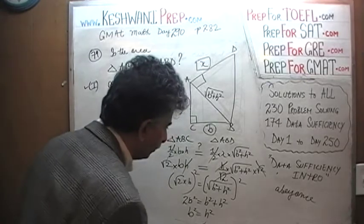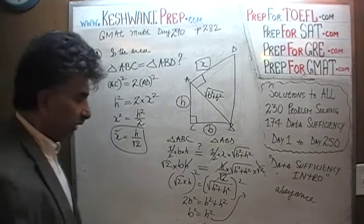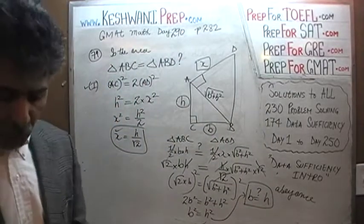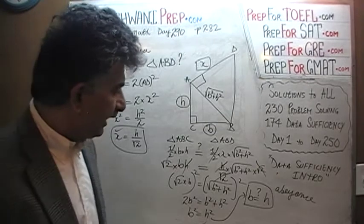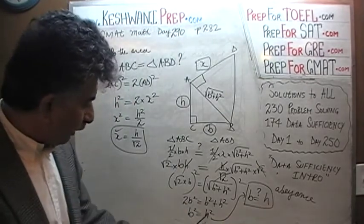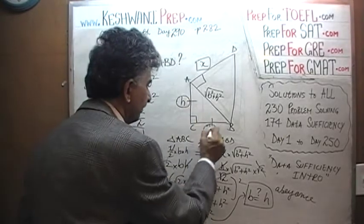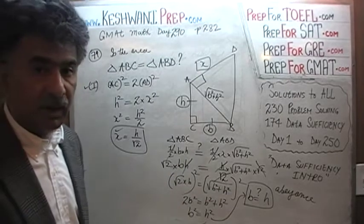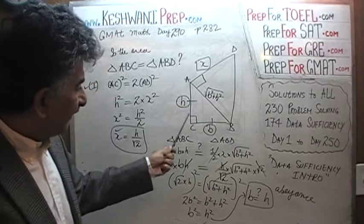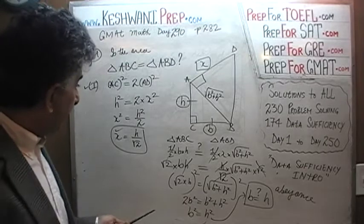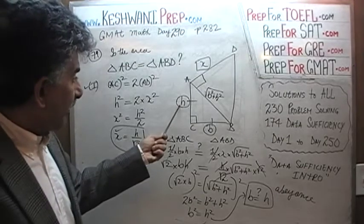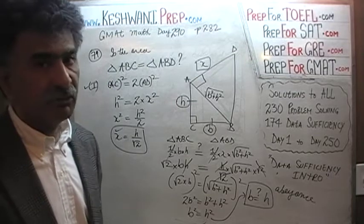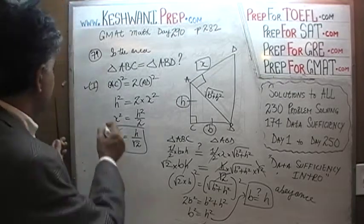B squared equals H squared, which means B has to equal H. This is what it boils down to: are these two sides — the base and the height — equal? As long as B equals H, the areas of the two triangles are going to be equal. If base and height are not the same length, they won't be equal. But the problem is we have no way of knowing that. The first statement tells us nothing about the relation between base and height, so the first statement by itself is not enough.